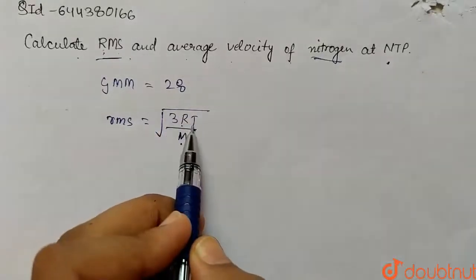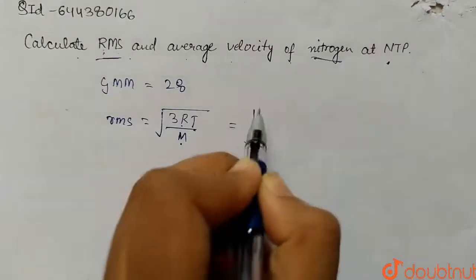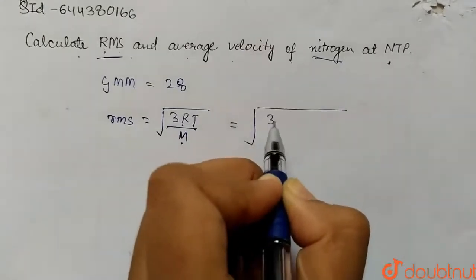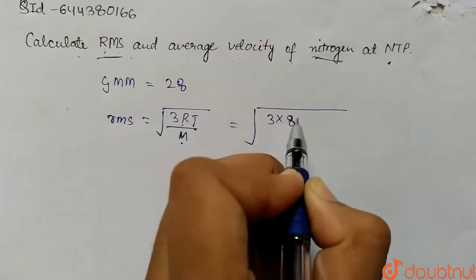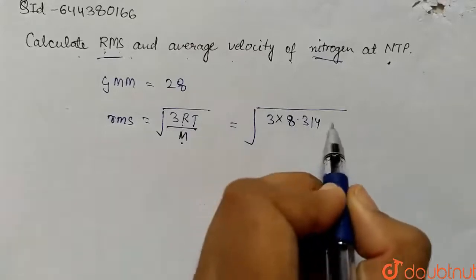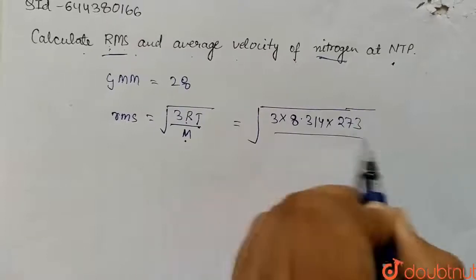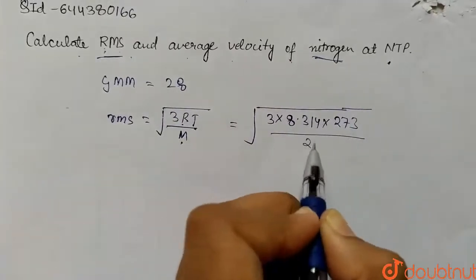So here, if we put the value it will be 3 into 8.314, that is the value of R, into T we'll put as 273, and then divided by M which is 28.